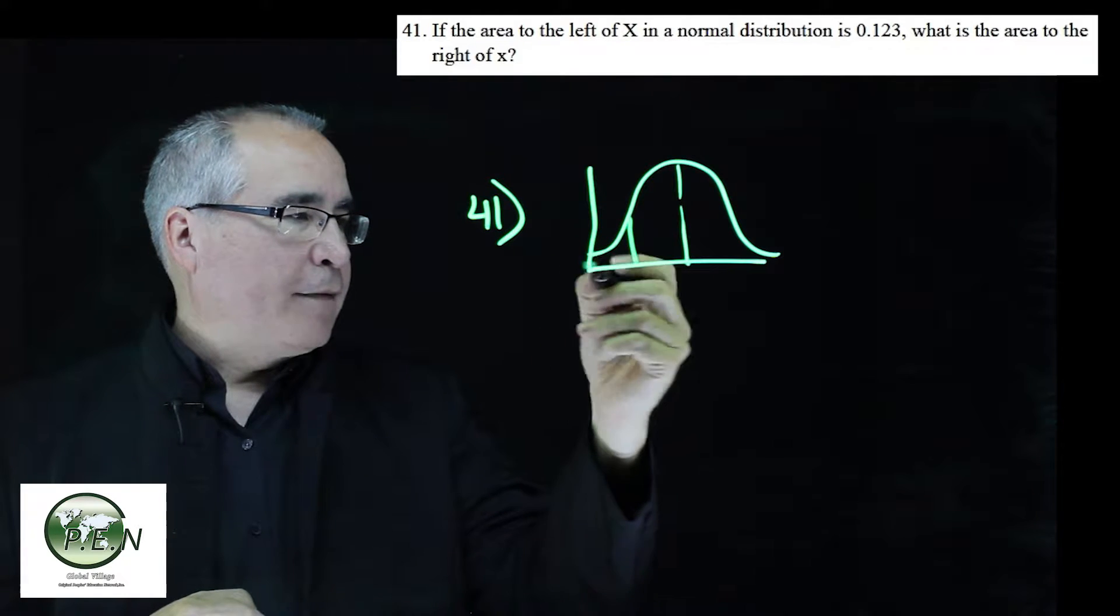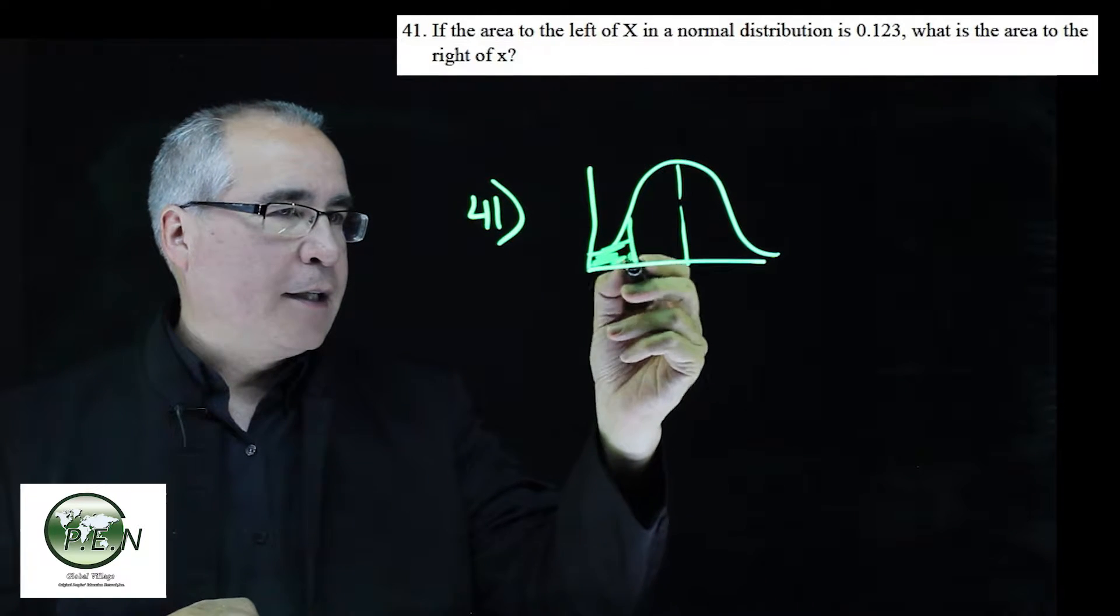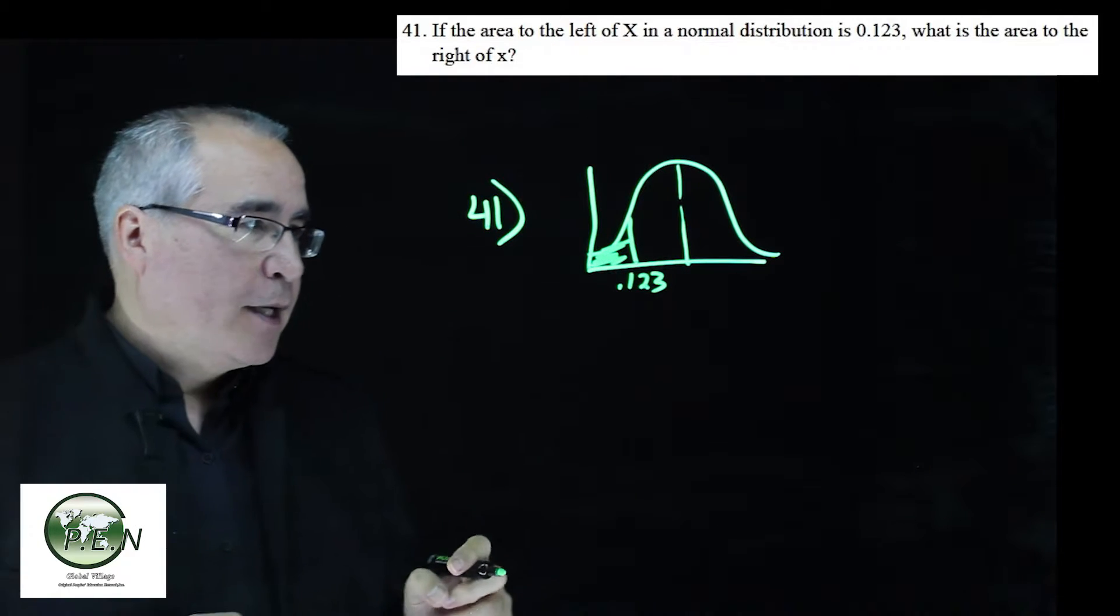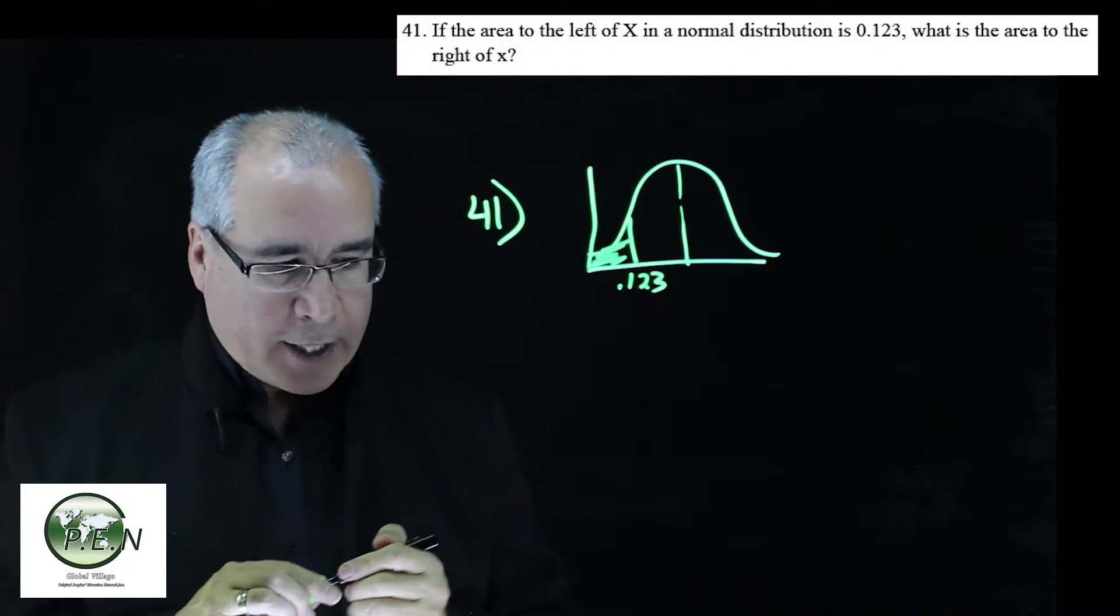The area to the left, this area, is 0.123, which is 12.3%. So we want to know what's the area to the right.